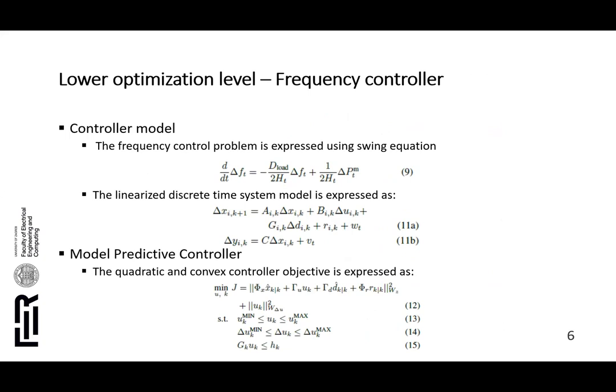The lower optimization level, or frequency controller, is in charge of frequency primary reserve provision in grid-connected mode and is developed based on a model predictive control approach. The frequency control problem at the aggregated system level is stated using the swing equation to describe the inertia of the system. In equation nine, delta F is the frequency deviation from nominal, H is the inertia-based supply time constant, D_load is the load damping coefficient, and delta PM is the mechanical power balance within the considered grid. The MPC optimization problem is expressed with equations 12 to 15, using a quadratic cost function.